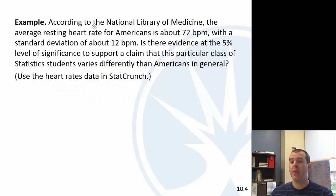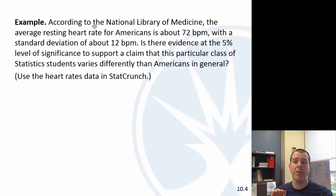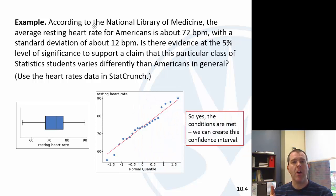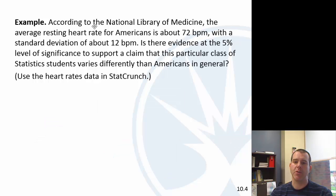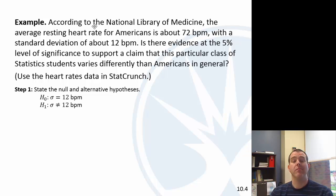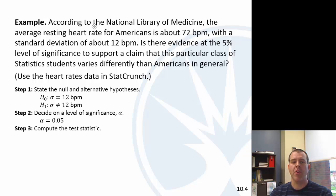We should be clear here: the confidence interval for standard deviation or variance had a very strict requirement — regardless of sample size, your population must be normally distributed. We did that check already, and we said we're not certain, but it certainly seems like this could come from a normally distributed population. So our null hypothesis is the status quo — we're the same as everybody else — and the alternative is that we're different, we have a different standard deviation. Level of significance is 0.05.